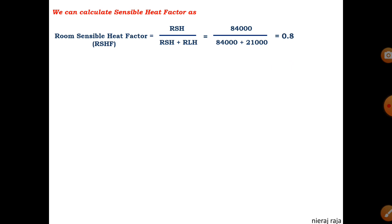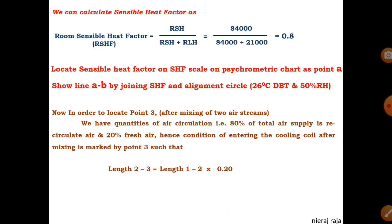The RSHF value of 0.8 is an alignment circle value that you will locate on the psychrometric chart. There is an SHF scale on the right side, near the humidity vertical line. Mark point A at 0.8 on the SHF scale, and mark point B on the alignment circle, which is always at 26°C DBT and 50% RH. Then join points A and B. Draw a parallel line through point 2 to get the RSHF line.